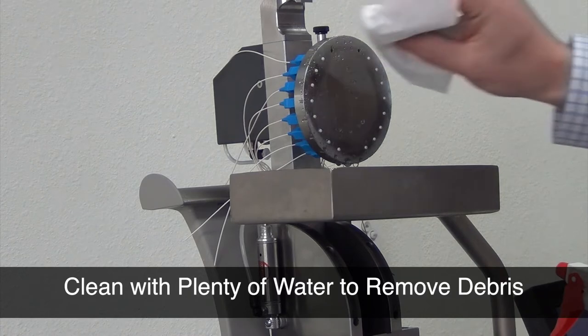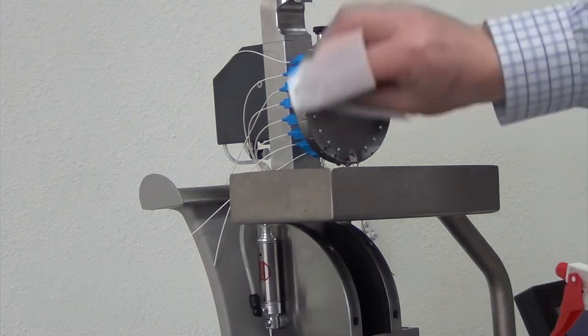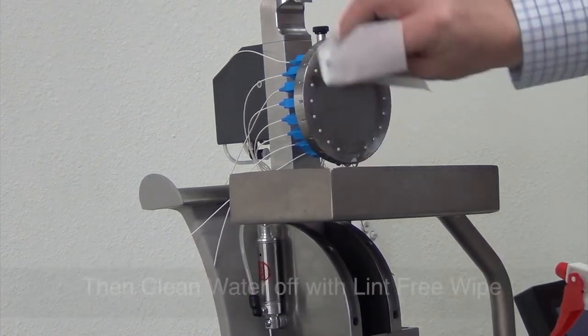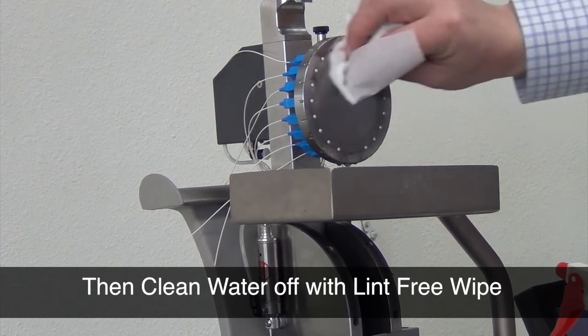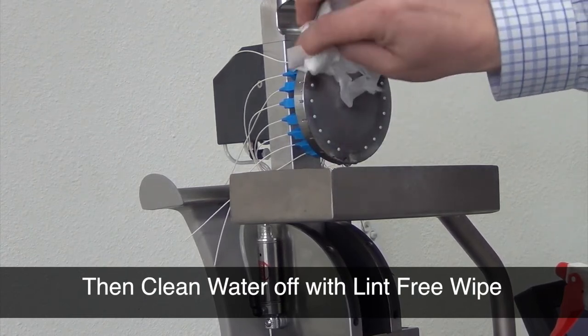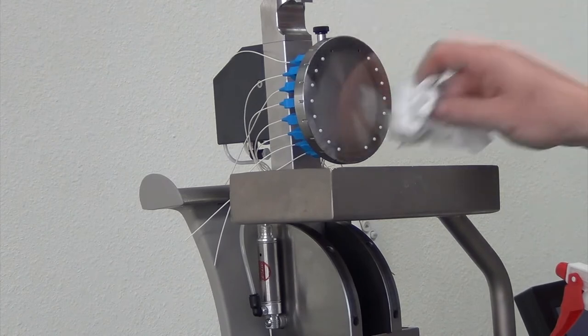You can be fairly aggressive with the Kim Wipes or Lab Wipes. Use some alcohol to clean in between steps using circular motions. You can go right across the fibers and the ferrules.